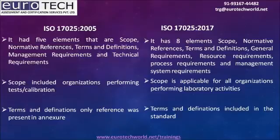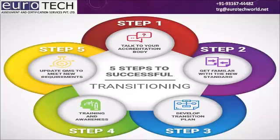ISO 17025-2005 had five elements: scope, normative references, terms and definitions, management requirements, and technical requirements. ISO 17025-2017 has eight elements: scope, normative references, terms and definitions, general requirements, resource requirements, process requirements, and management system requirements. In 2005 the scope covered organizations performing tests and calibration, while in 2017 it is applicable to all organizations performing laboratory activities. In 2005, terms and definitions only referenced an external document, while in 2017 terms and definitions are included within the standard itself.